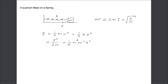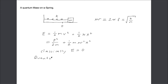Classically, this energy can be anything, even zero. We could have the particle sitting at x equals zero with zero velocity — no force acts on it, potential energy is zero, so energy is zero. But quantum mechanically, we have a problem because of the uncertainty principle. In quantum mechanics, we cannot say that both the momentum and the position are definitely zero.